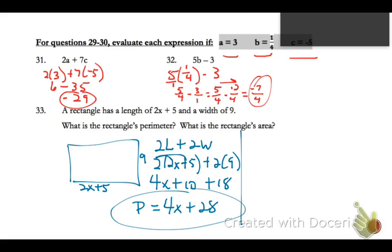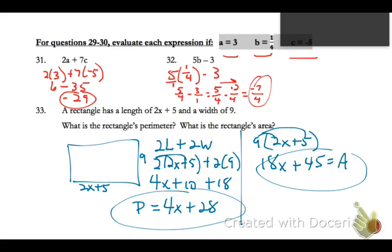Area of a rectangle, remember we're going to take length times width. I'm going to put my width first and then my length. I'll distribute. 9 times 2 is 18x, 9 times 5 is 45. And that is our expression for area.